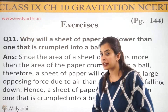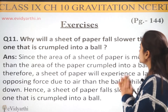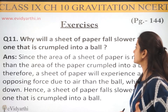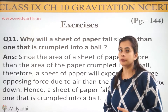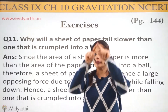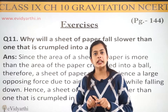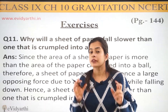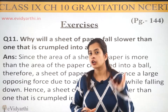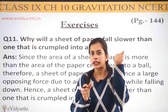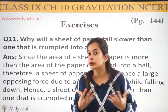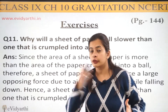Let's see, kya hai humare question mein? Why will a sheet of paper fall slower than one that is crumbled into a ball? So basically, yaha par question mein kya diya gaya hai? Koi bhi sheet of paper le liya — plain sheet — and then usi sheet ko ek crumble karke, usko machod ke poora ek ball ki tarah bana diya, which we are used to do during school time.